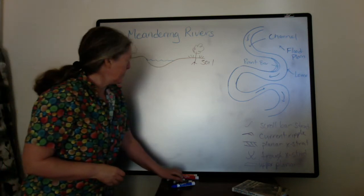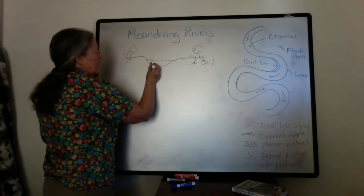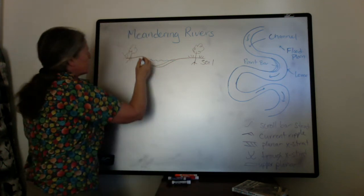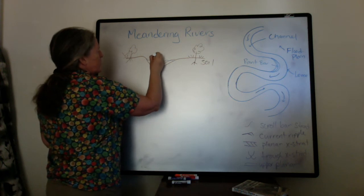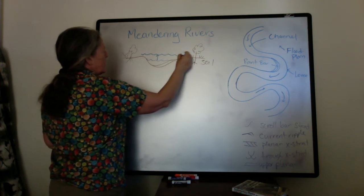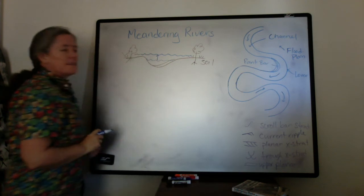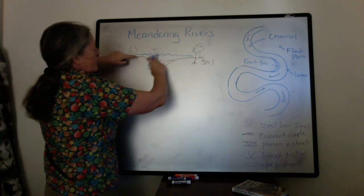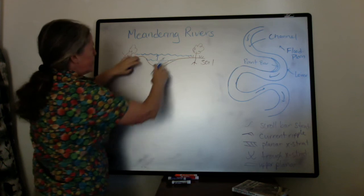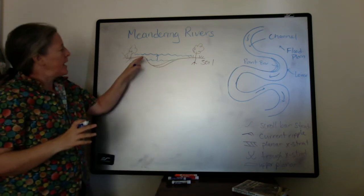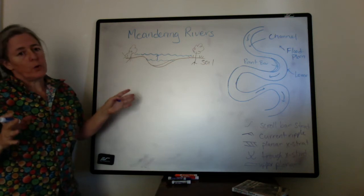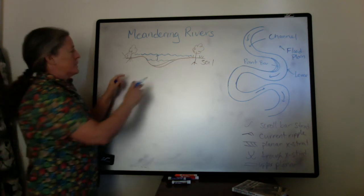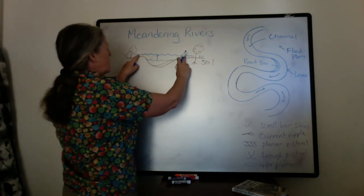Through time, sediment accumulates in the river channels, and there is erosion. But almost all rivers are subject to floods, and when the water level goes up, two things happen. One is that the cross-sectional area that the water is flowing through expands dramatically, which causes the water to slow down — there is more friction with the bottom and a much broader flow.